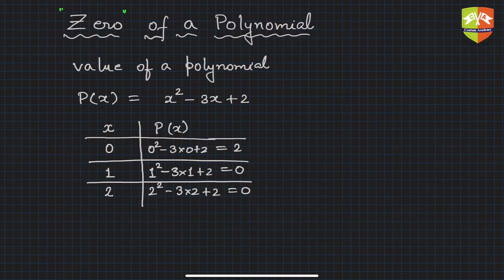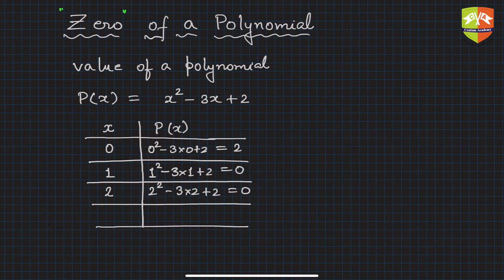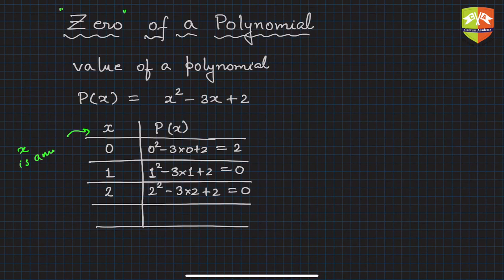It's not necessary that we take only integer values of x. You can take any real number — 0.2, 0.3, 0.9, minus two-fifths, root three, root seven, anything. For calculation purposes we are just taking easier numbers. There is no restriction; x could be any real number.